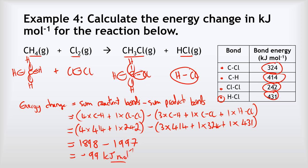We can use the cancelling shortcut here: we've got three carbon-hydrogen bonds on the right and four on the left, so if we cancel out those three and just keep one carbon-hydrogen on the left, that simplifies the calculation a little and saves time in the exam — but only do that if you're really confident with your mathematics.